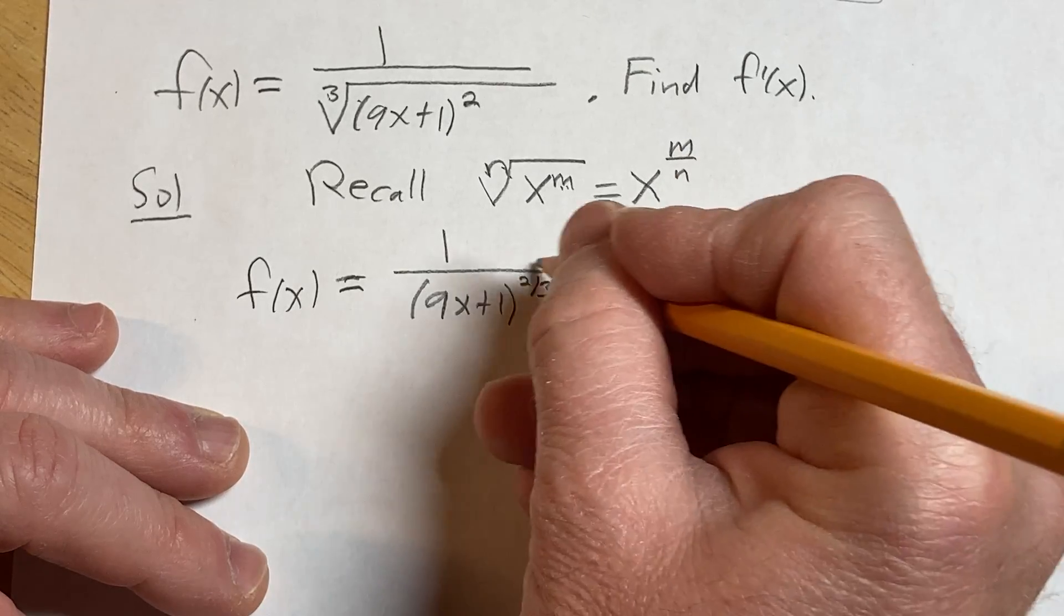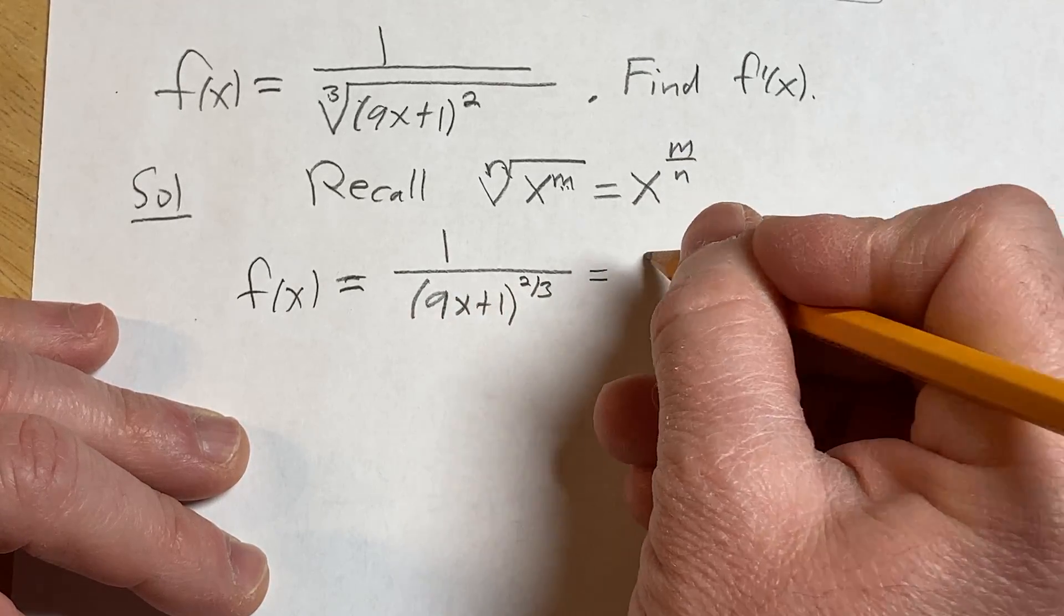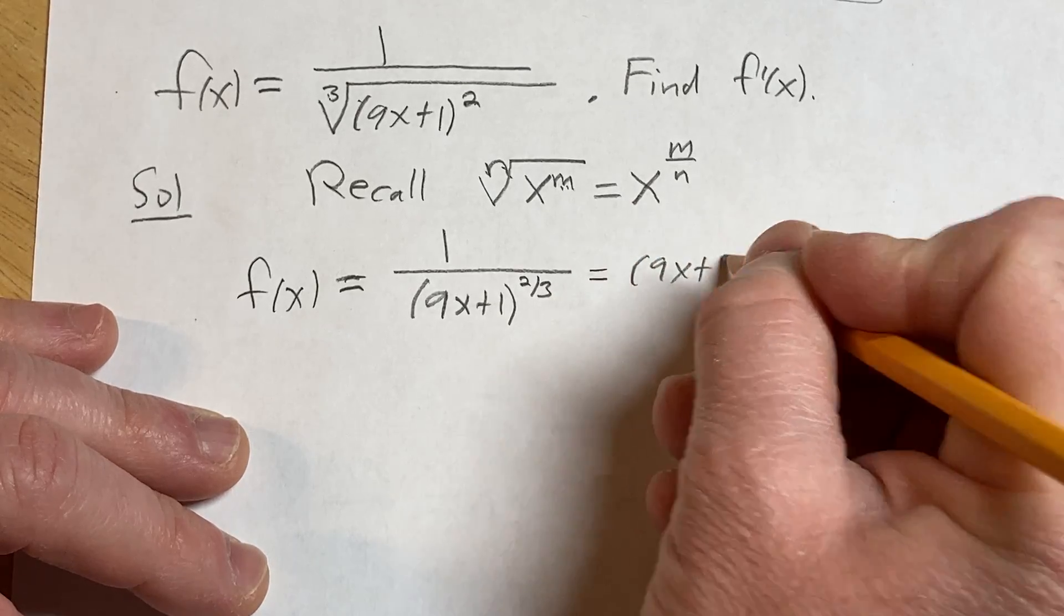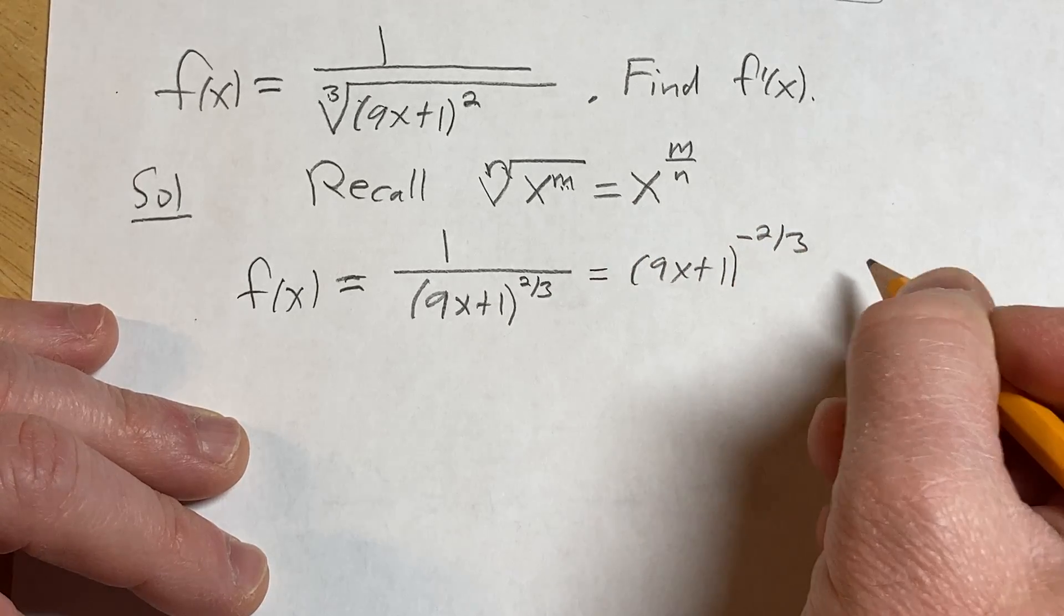When we do that, this exponent becomes negative. So it becomes (9x+1) to the negative 2/3.